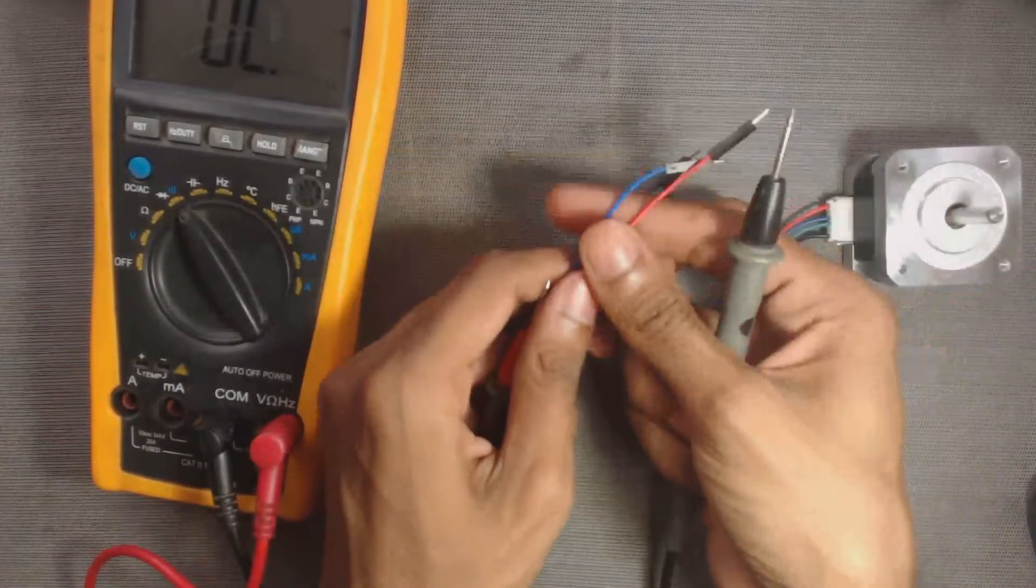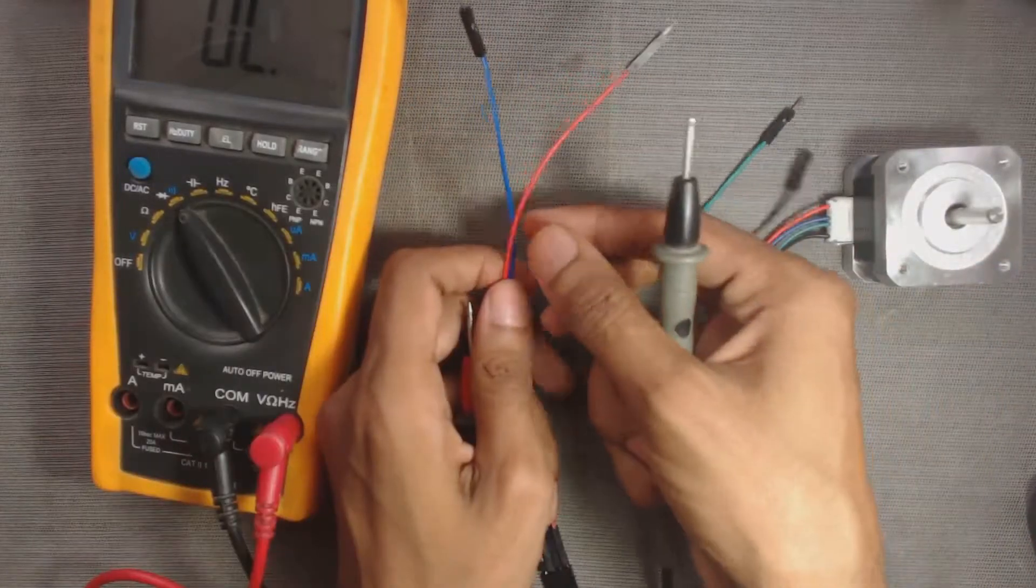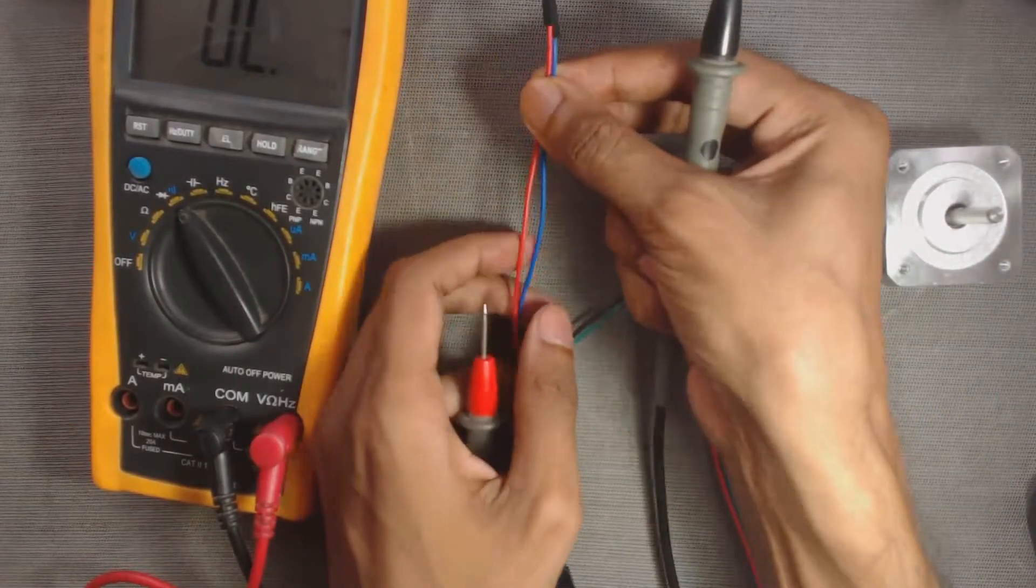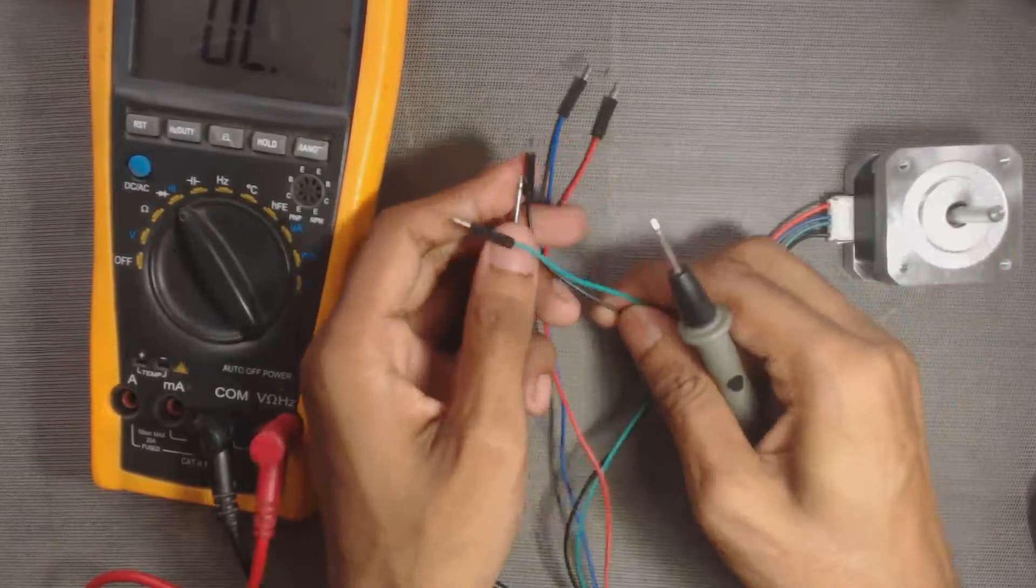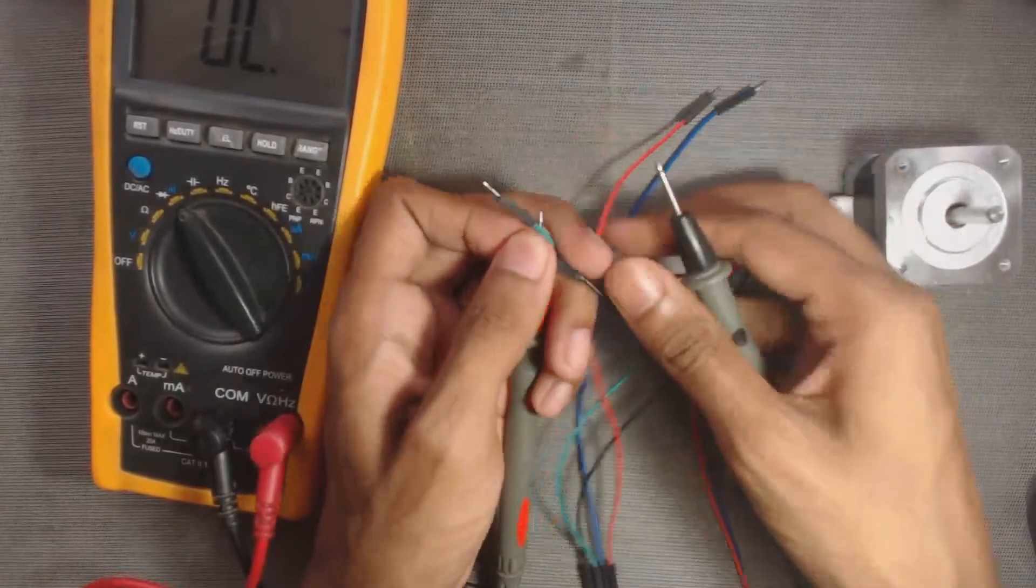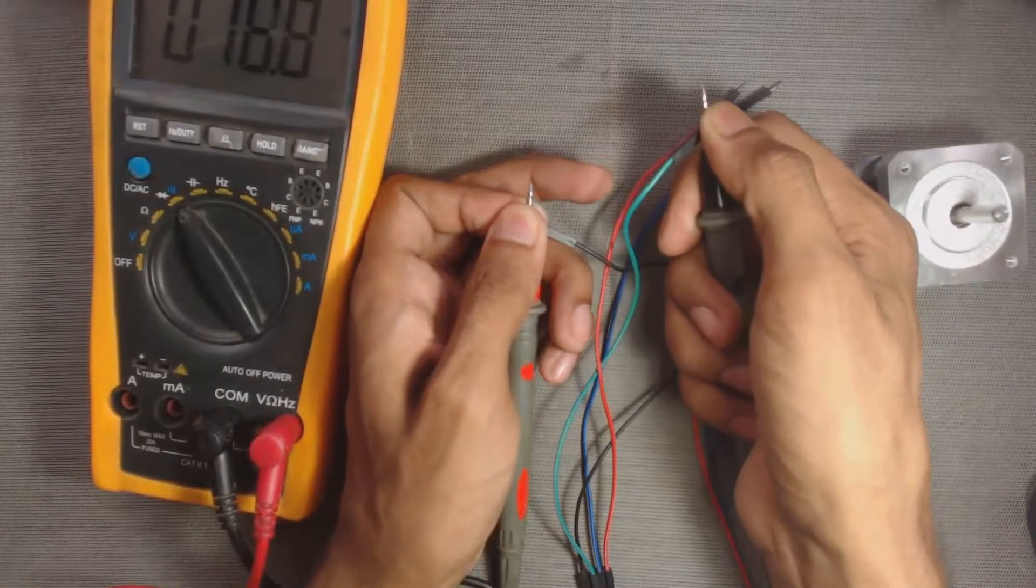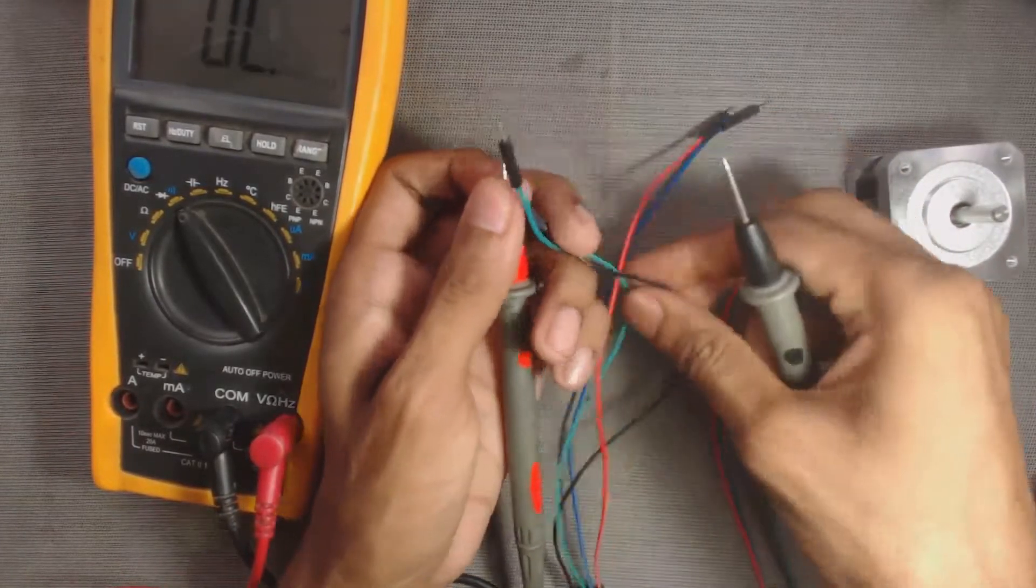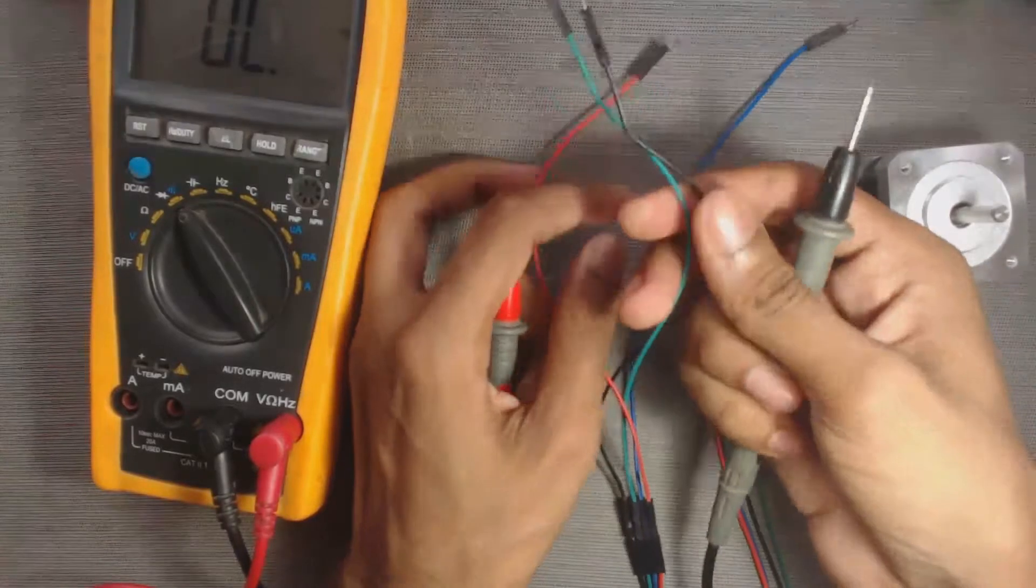That means these two wires are from the same coil. Now the remaining two wires, black and green - we can also hear the sound. That means these two wires are from the other coil.